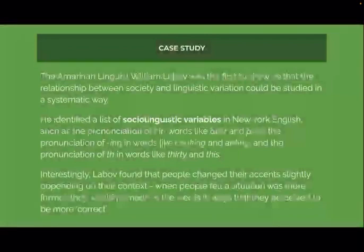He identified a list of sociolinguistic variables in New York English, such as the pronunciation of R in words like beer and pork, the pronunciation of ING in words like cooking and eating, and the pronunciation of TH in words like thirty and this. Interestingly, Labov found that people changed their accent slightly depending on their context — when people felt a situation was more formal, they would produce words in ways they perceived to be more correct.